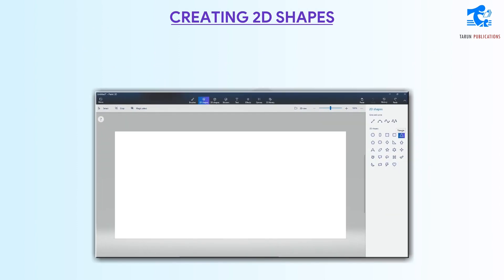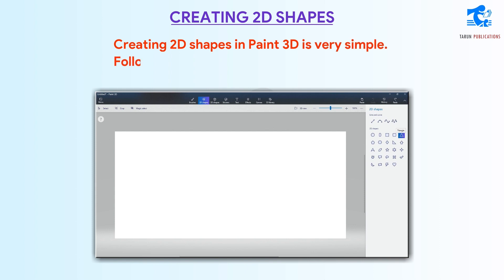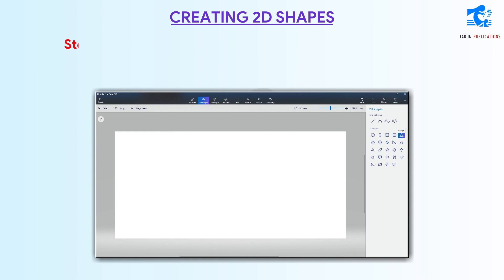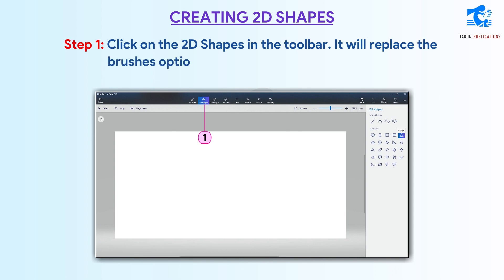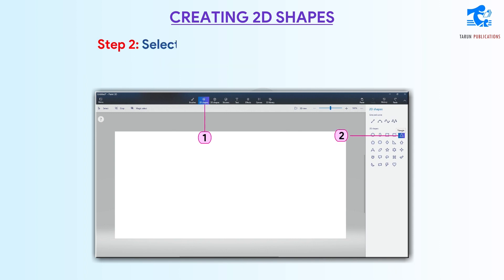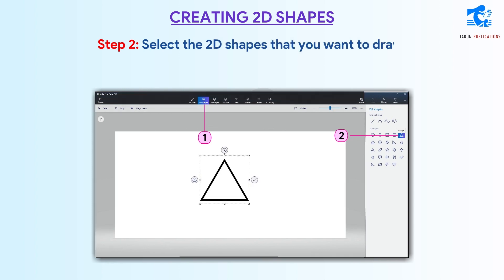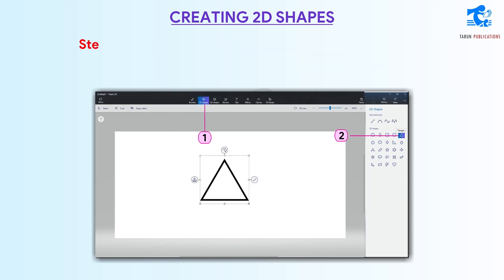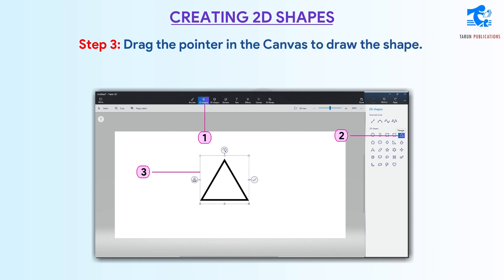Creating 2D shapes in Paint 3D is very simple. Follow these steps for creating a 2D shape. Step 1: Click on the 2D shapes tool in the toolbar — it will replace the brush options on the side panel. Step 2: Select the 2D shape that you want to draw. Step 3: Drag the pointer in the canvas to draw the shape.